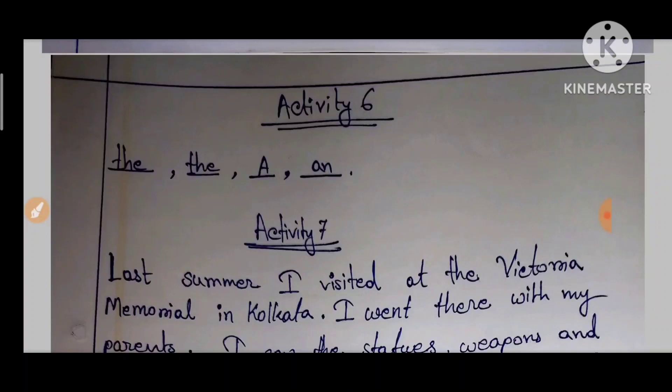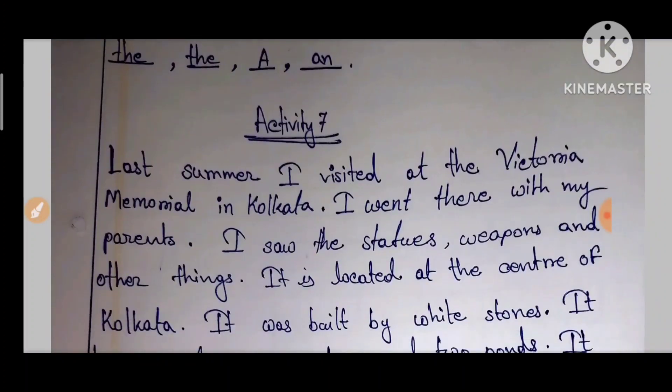If you have visited a place of interest, write at least five sentences about that place. Begin with the name of the place. Here are some hints to help you.